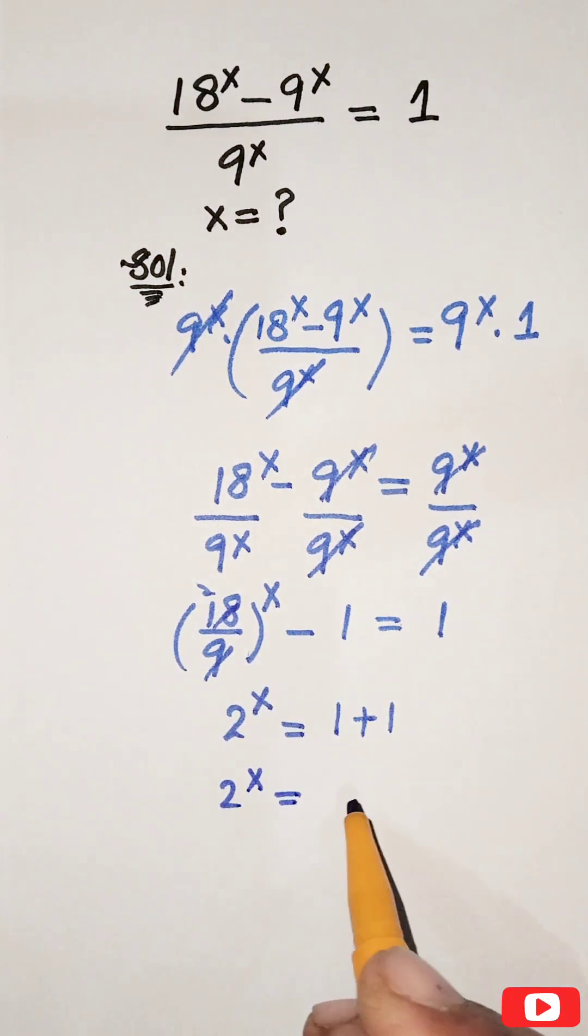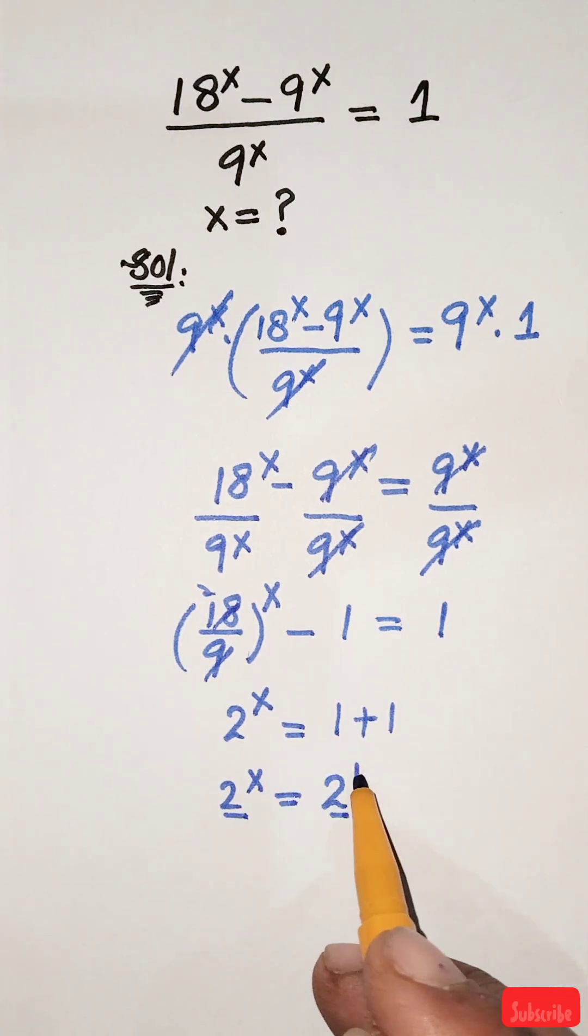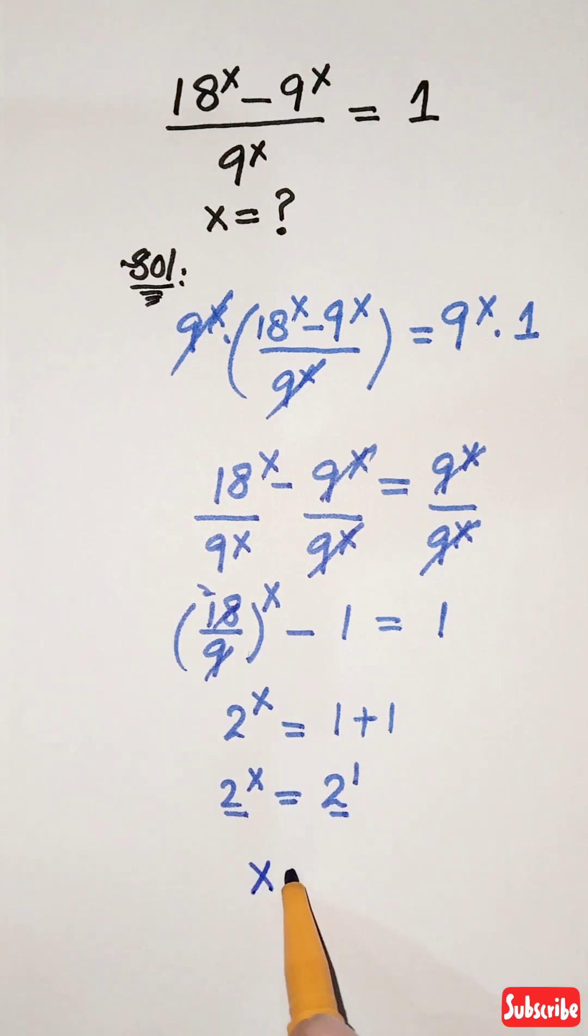Now 2^x equals 2. Since the bases are the same, the powers must be equal. When x is 1, we get x equals 1. This is our answer.